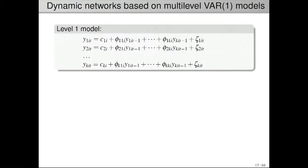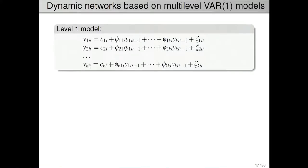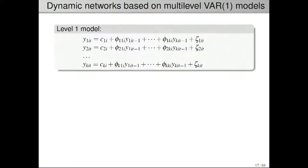Here we have Y1 to YK — different variables, such as symptoms associated with depression — and they are predicted from themselves, so here we see the autoregression for variable one, but also from all the other variables at the previous occasion. Y2 is also predicted from Y1 and all the other lagged variables up to K. It's called vector because it's multivariate; autoregressive because you regress on the vector itself; order one because it's only lag one — the current score compared to the previous score, not the one before that.